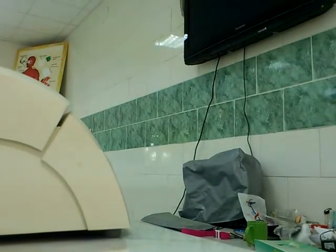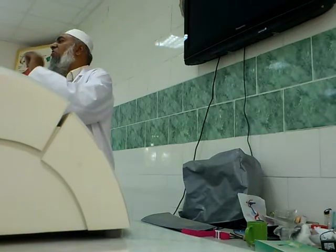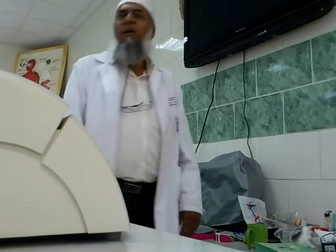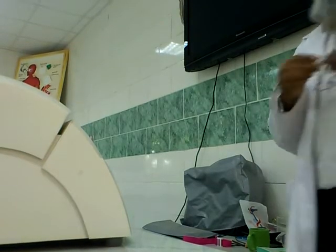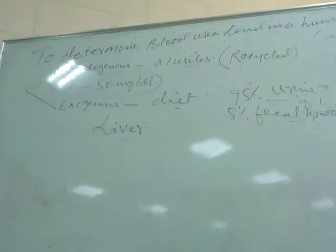Normally, despite excretion in urine and feces, our blood also contains some urea. This urea level is highly variable, somewhere between 10 to 50 mg per dL, which is considered the normal range of urea in our body.